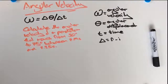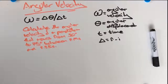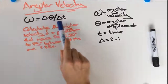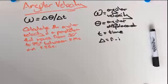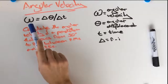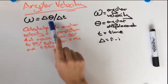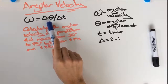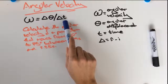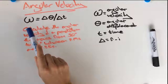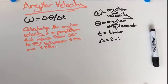Kia ora team, so today we're going to calculate angular velocity. Here we have our formula for angular velocity. If we just have a look at the symbols here: over here we have our symbol for angular velocity, over here angular displacement, and over here our time. So the formula reads: angular velocity is equal to the change in angular displacement divided by the change in time.